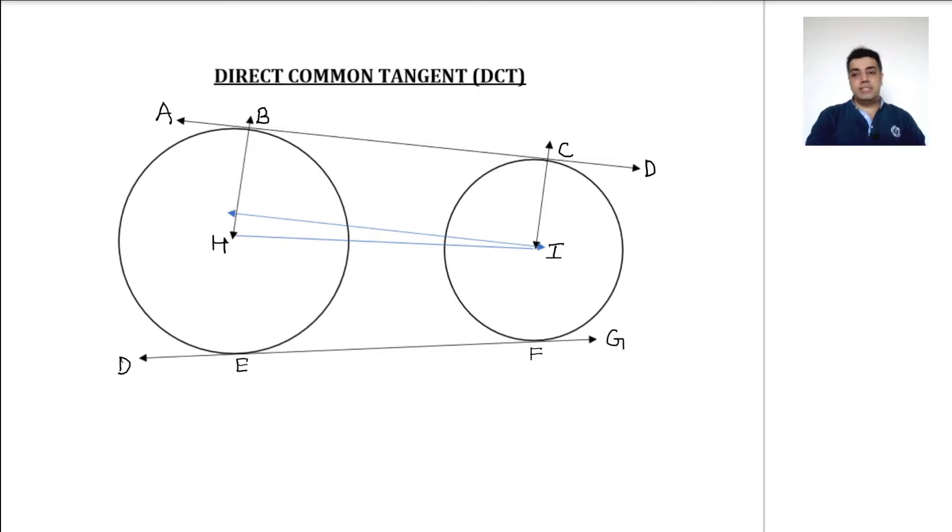Before we begin the discussion, there are a few things which are expected out of a learner. First and foremost, you should know the terminology of a line, line segment, ray, transversal, etc. Second, you should know the law of similarity and law of congruency. When I say law of similarity and law of congruency, I am basically referring to those 5-6 tests: SAS, triple S, double AS, etc. You should know law of parallelism, perpendicularism, and so on.